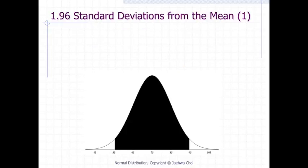For all normal distributions, 95% of the area is within 1.96 standard deviations of the mean. The shaded area contains 95% of the area and extends from 55.4 to 94.6.